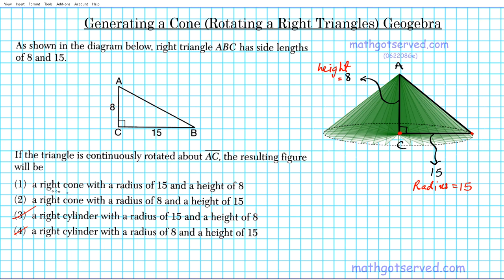Let's look at the options: right cone with a radius of 15 and a height of 8. So the correct answer is option number 1. Remember that when you want to generate a right cylinder, you rotate a square or rectangle. But if you want to generate a right cone, you rotate a right triangle like we have here.